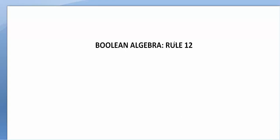Hello students. In today's video we will prove Rule 12 of Boolean algebra. Rule 12 of Boolean algebra is: A or (B and C) is equal to (A or B) and (A or C). We write it as: (A or B) and (A or C) = A or (B and C).